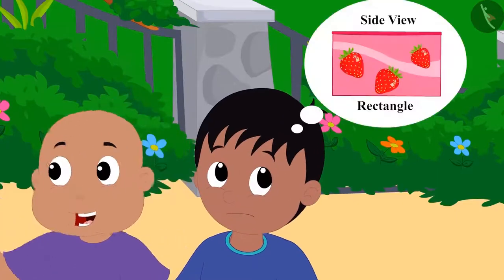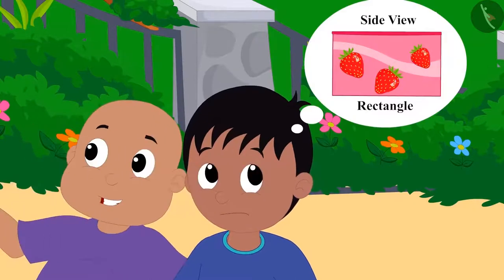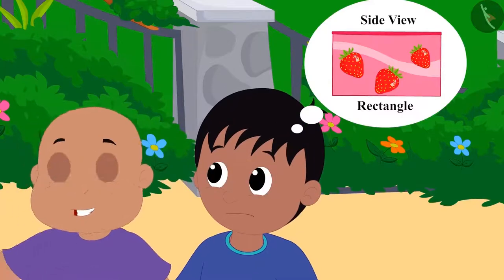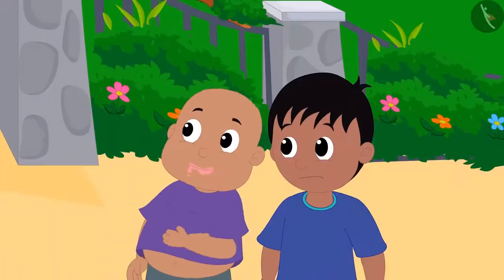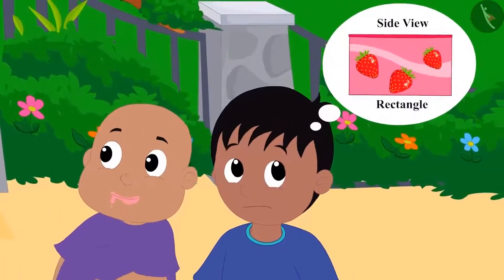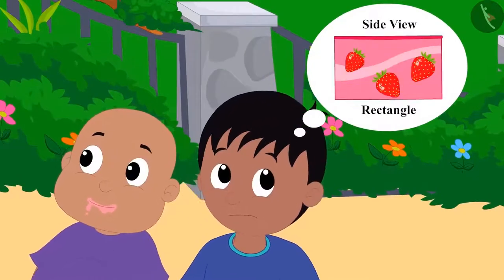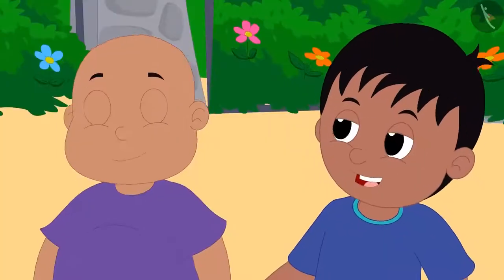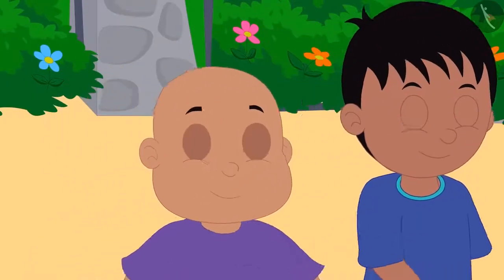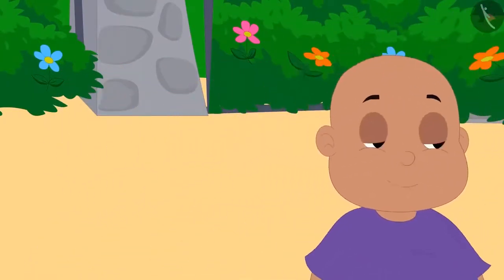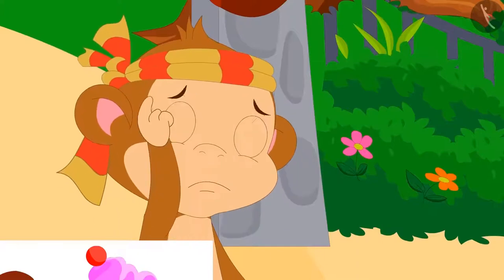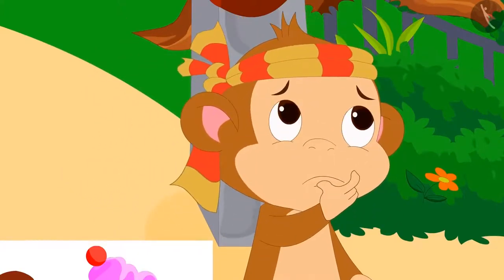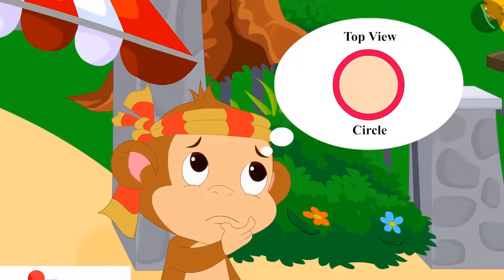Bablu ate the ice cream and Raju began to think about how Bablu had made a fool of Babban. Bablu and Raju laughed and started walking home, while Babban kept scratching his head wondering how Raju and Bablu had managed to fool him.